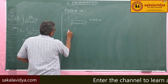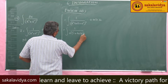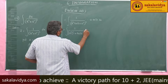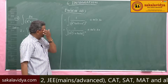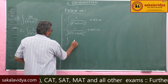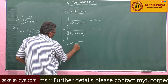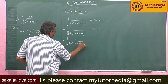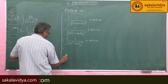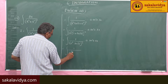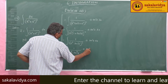This becomes integral of 1 by (a² is common, 1 + tan²θ)² into a·sec²θ·dθ. Since 1 + tan²θ = sec²θ, this is 1 by (a²·sec²θ)² into a·sec²θ·dθ, which equals integral of 1 by a⁴·sec⁴θ into a·sec²θ·dθ.